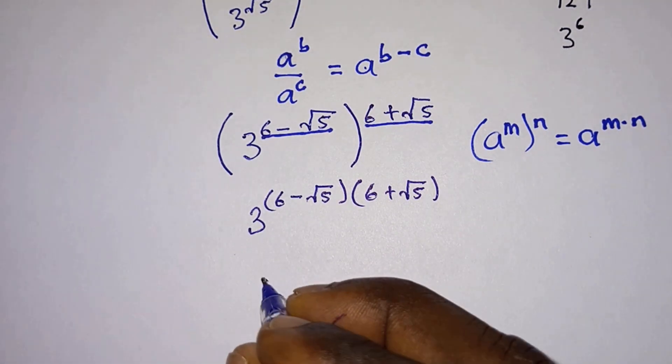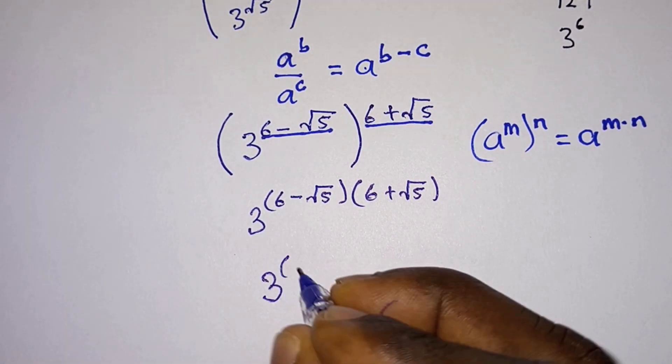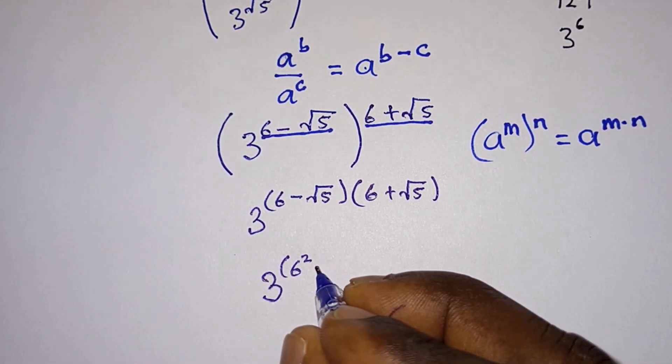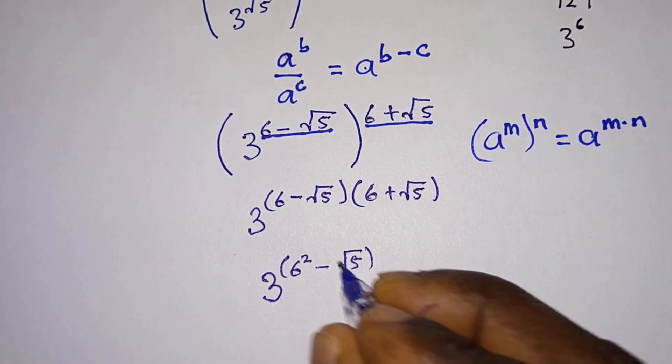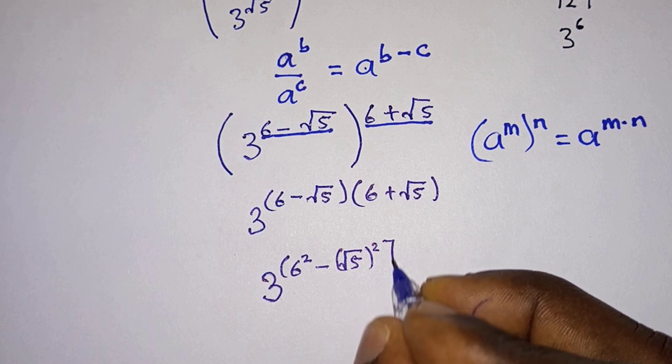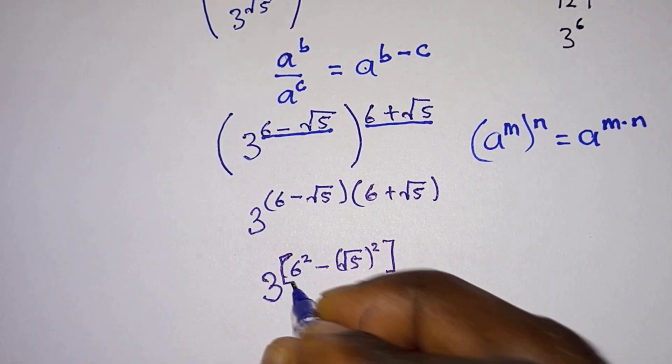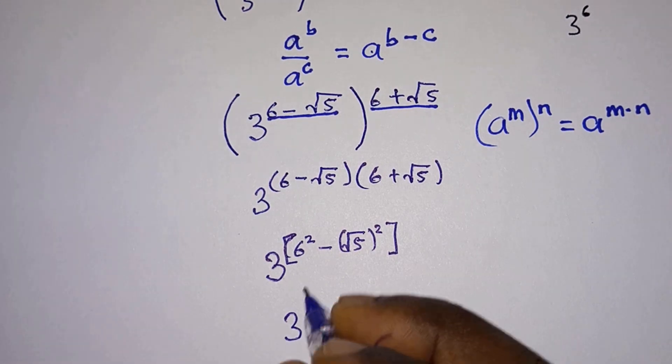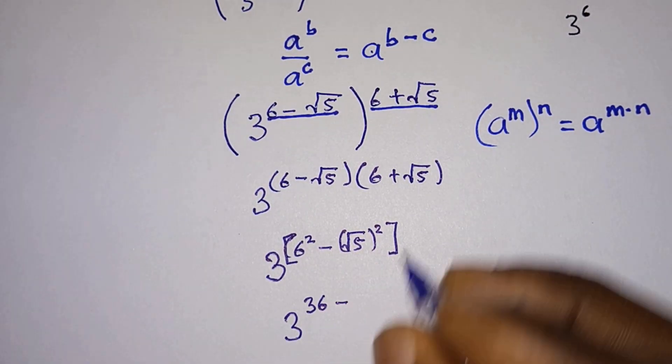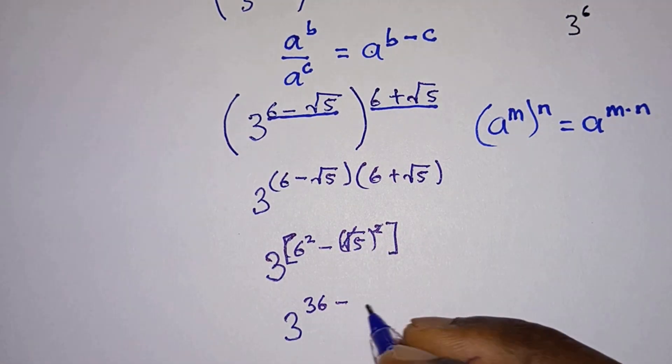So we can write it as 3 to the power 6 squared minus square root of 5 squared. Right, so we have 3 to the power 6 squared is 36 minus this, and this one will go, so we have minus 5 over here.